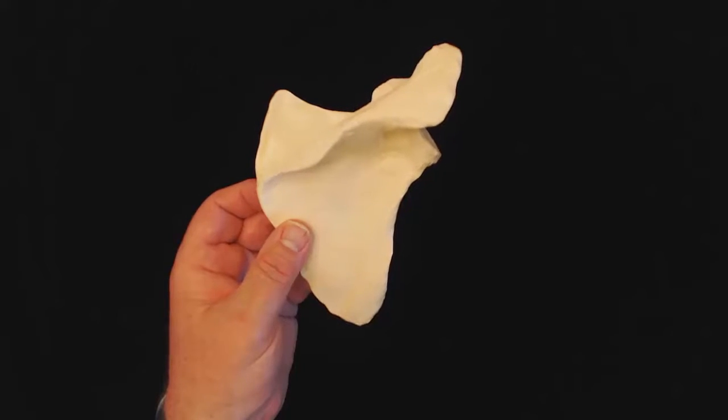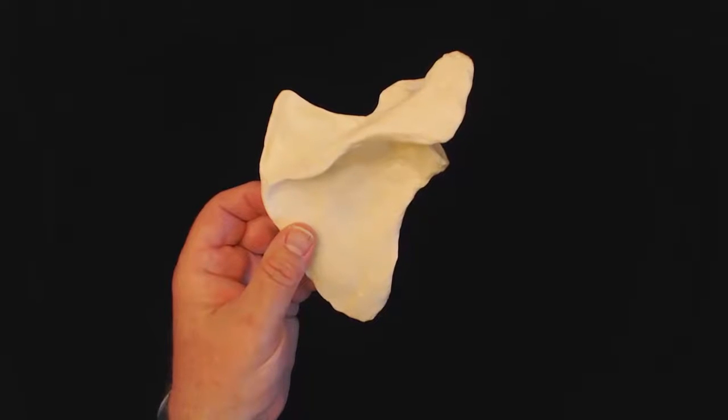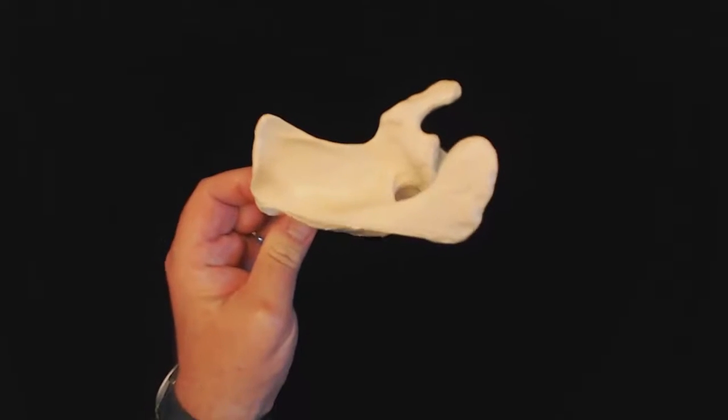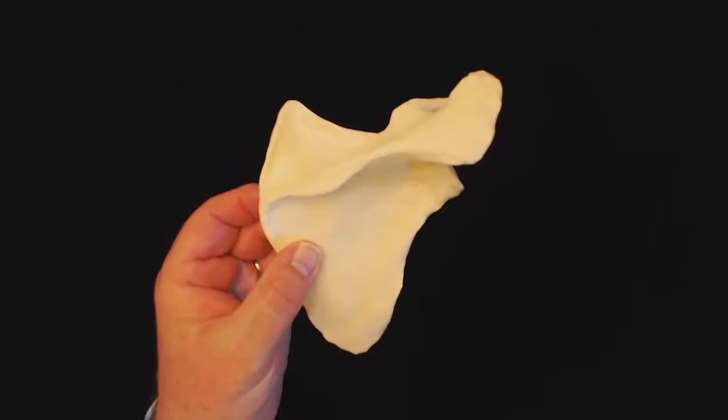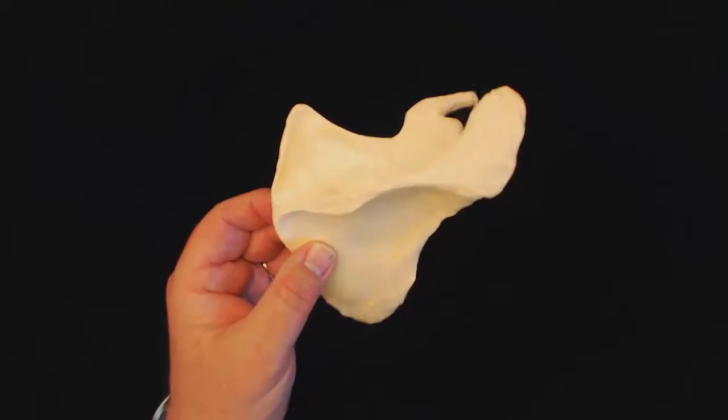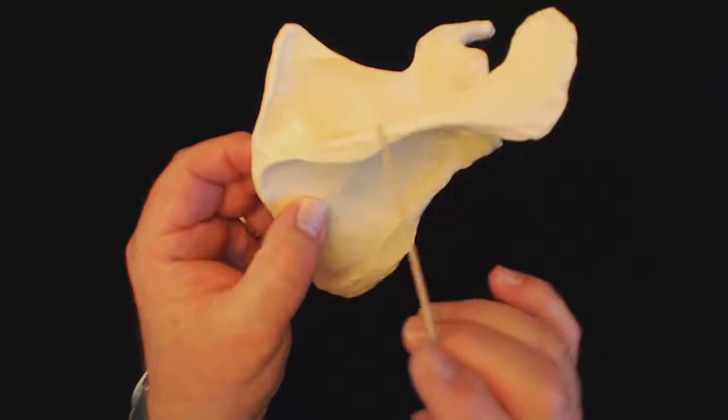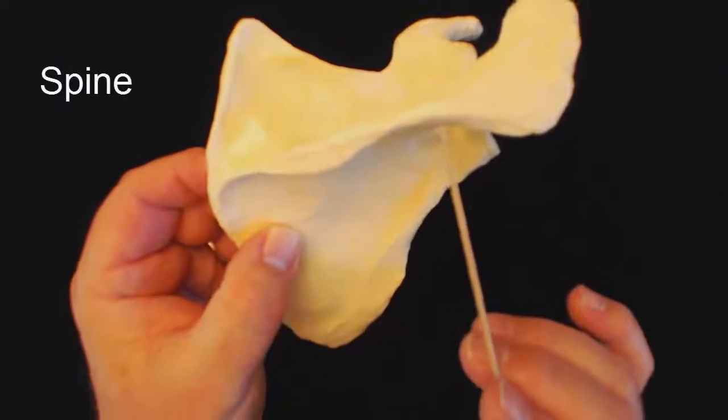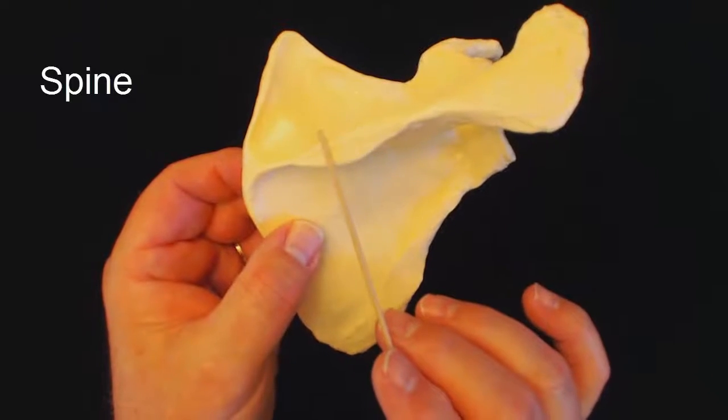And how we know it's the posterior view is because if we looked at an entire skeleton and we saw the scapula up against the ribcage, this is the view that you would see looking from behind. And one of the big landmarks that's going to tell us that this is the posterior view is this right here. This is the spine of the scapula.